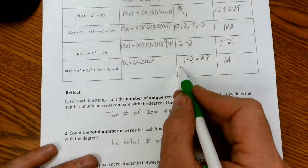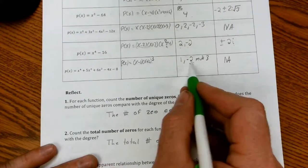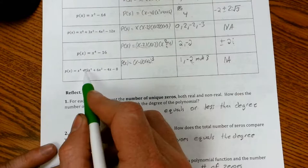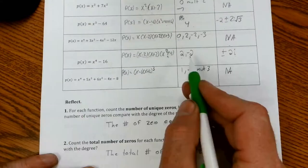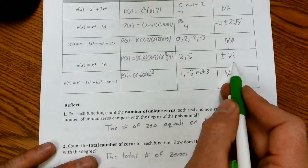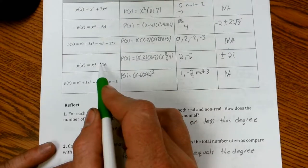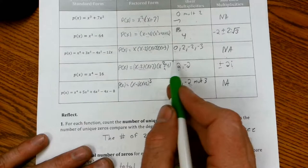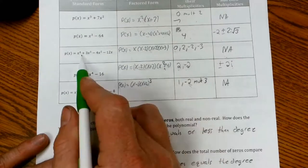And the total number of zeros always seems to be equal to the degree. So one and that negative two three times gives me four, which is the same as the degree. The two real here and the two imaginary give me four, the same as the degree. The four real gives me the same as the degree.